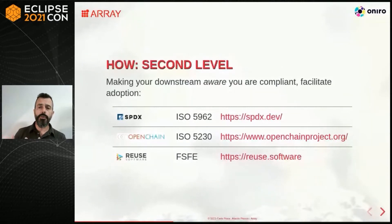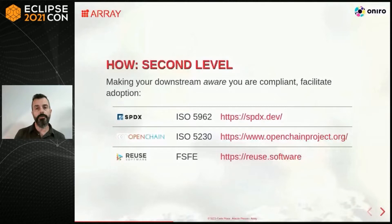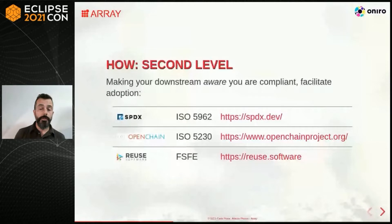OpenChain not only provides artifacts like software bills of materials or documents like licenses and copyright notices, but it approaches the internals of the project — making sure everything is well-staffed, everybody is on the same page, informed and documented, and there is a point of contact for compliance issues for reporting.